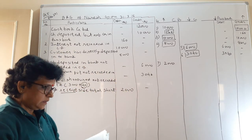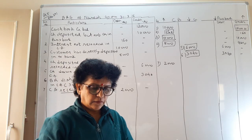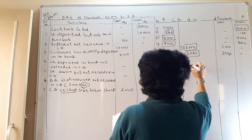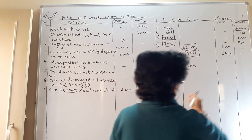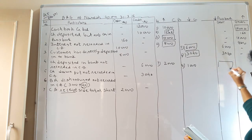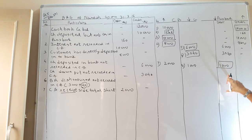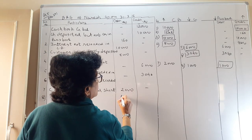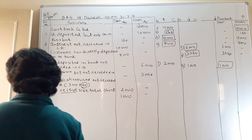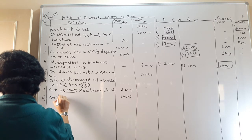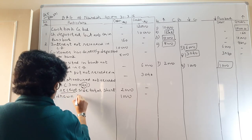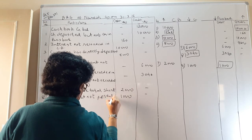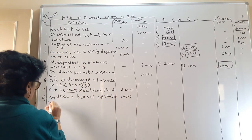Transaction 8: a check drawn but not presented for payment. When you issued the check, you credited rupees 1,000 in the cash book. But this check was not presented to the bank, so the bank has not debited 1,000. We need to debit 1,000. Entry: check drawn but not presented for payment — debit rupees 1,000.